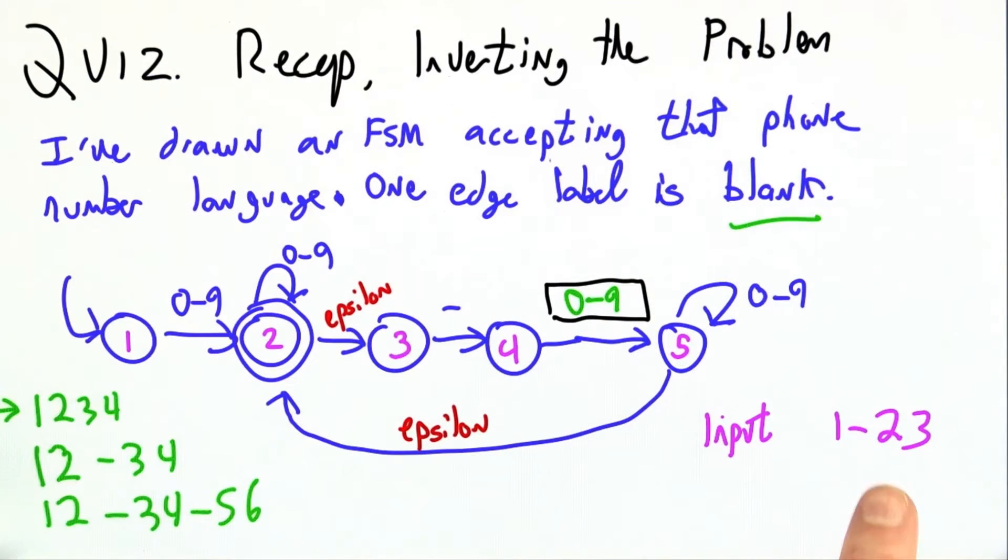Suppose we're back here in this previous finite state machine, but now the input is 1-2-3. Where are we? Well, we started here, and on a 1 we went here.